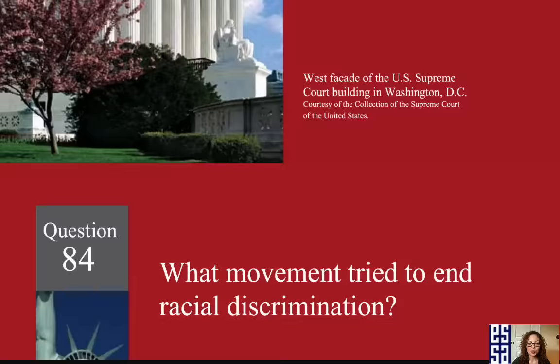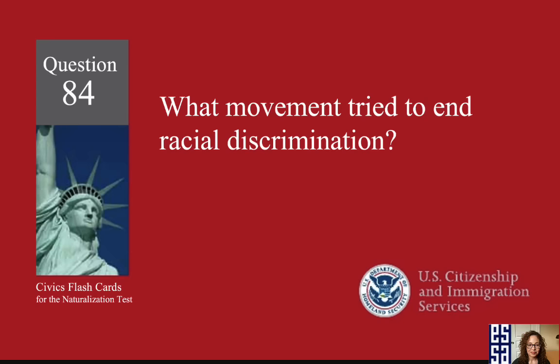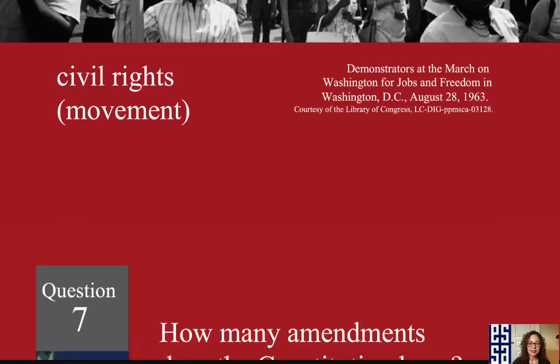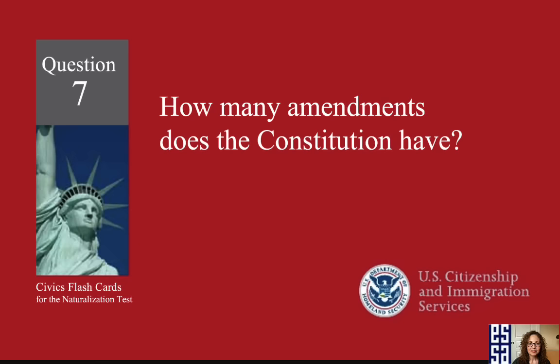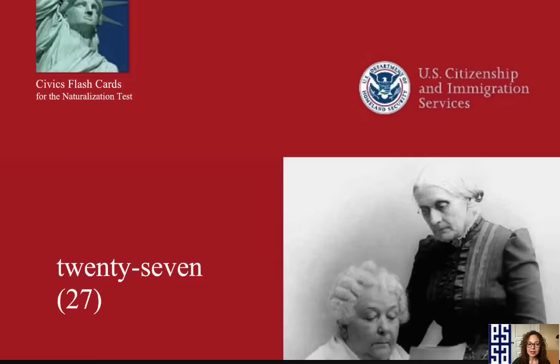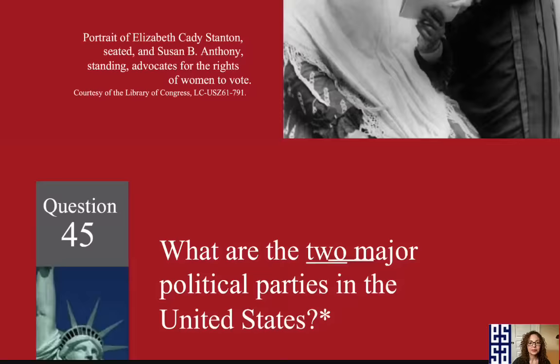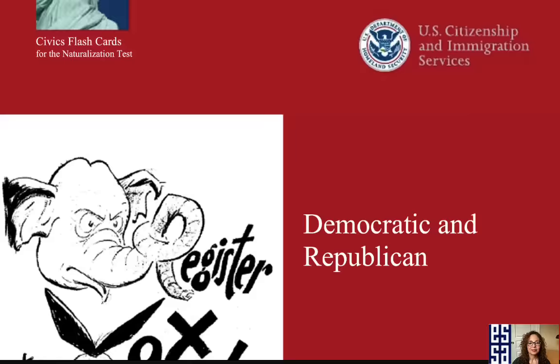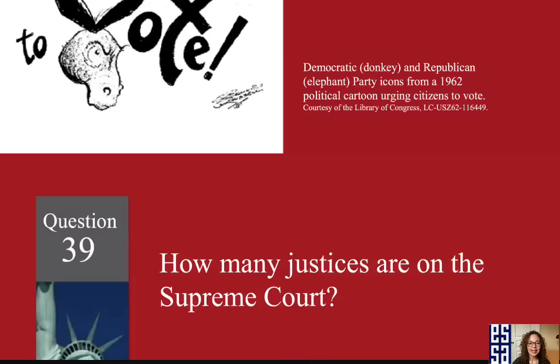What movement tried to end racial discrimination? The civil rights movement. How many amendments does the Constitution have? Twenty-seven. What are the two major political parties in the United States? Democratic and Republican.